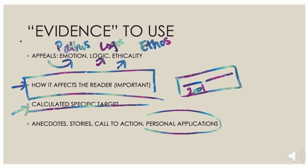Finally, we have personal applications such as anecdotes, stories, call to action, or whatever. You can use these things because a lot of times when readers see personal applications, they can integrate themselves into the author's shoes. When this happens, the author is more likely to persuade the reader in a more positive and effective way, because the reader is seeing everything from the author's point of view — and that is exactly what the author wants. It is a technique often used by many writers.